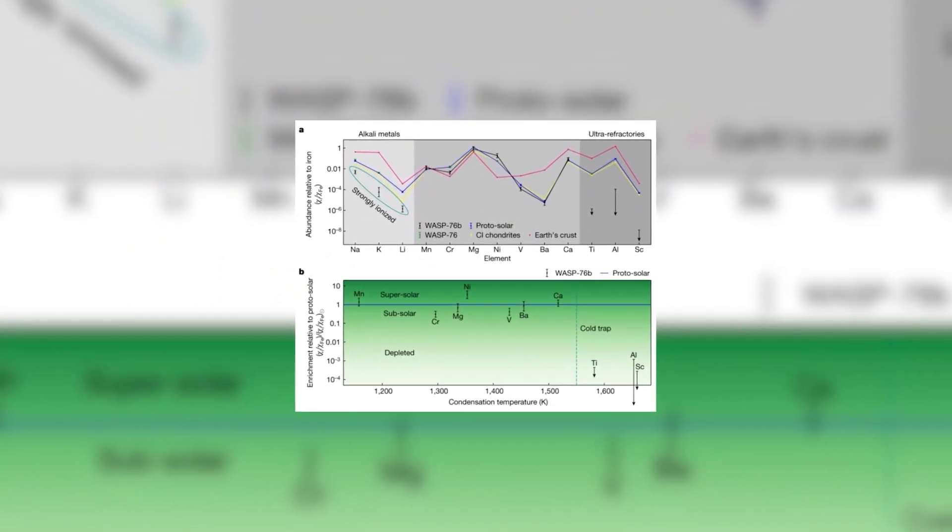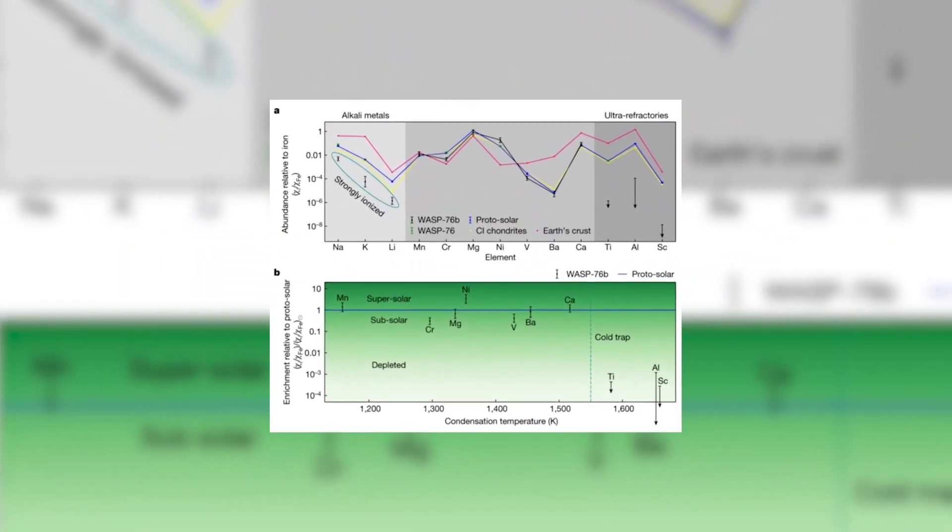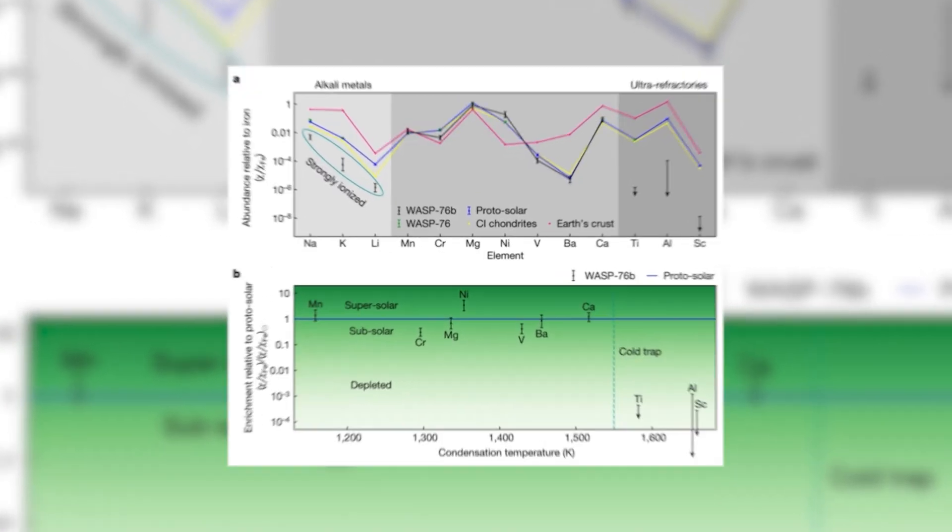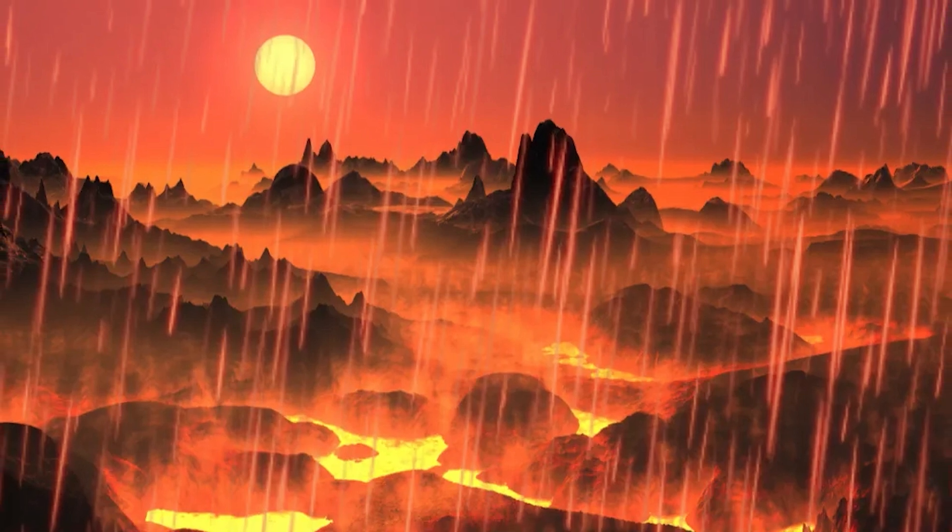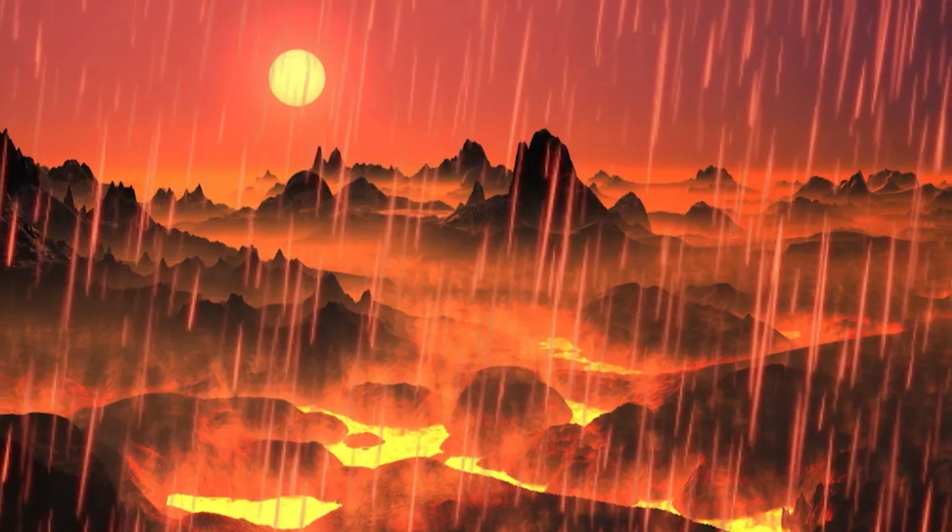Because of these huge temperature differences, strong winds blow from the hot side to the cold side, carrying the iron vapor. When this vapor cools down on the cold side, it rains molten iron. That's something you don't see every day.